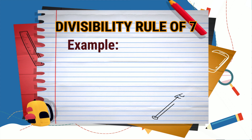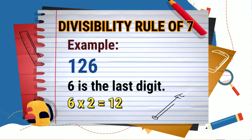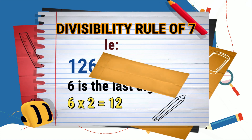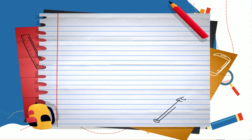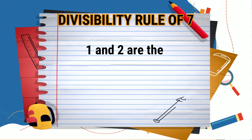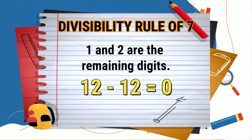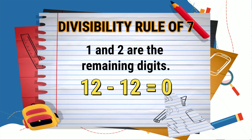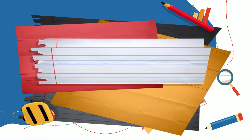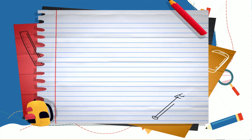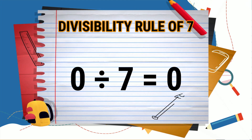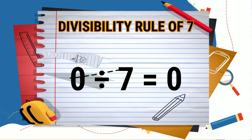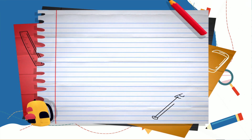Let's have the same example: 126. The last digit is 6, so 6 times 2 is equal to 12. Now subtract 12 from the remaining digits, which are 1 and 2 — therefore 12 minus 12 is equal to 0. Zero is divisible by 7: 0 divided by 7 is equal to 0.